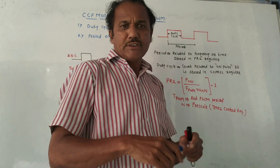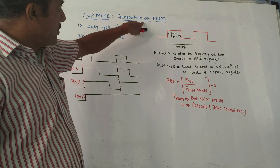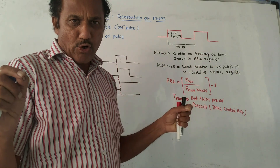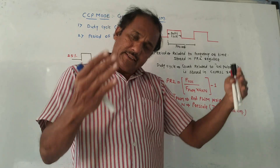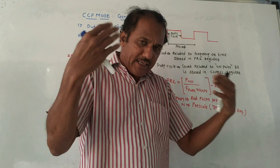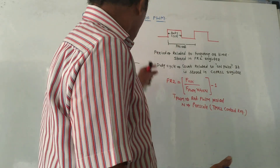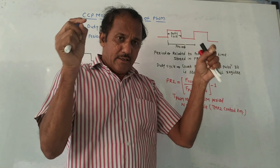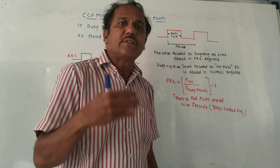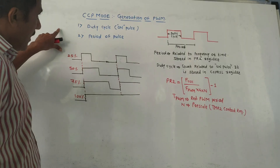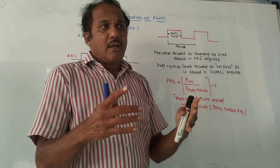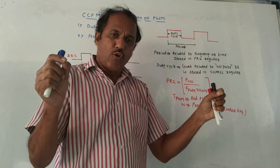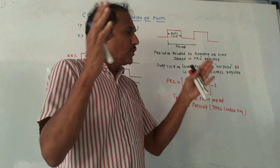Hello and welcome back to this channel. Today's topic is CCP mode generation of PWM waveform — that means we will discuss how to generate a PWM waveform using the CCP module of a PIC microcontroller. We previously discussed what CCP mode is. Today we discuss how to generate a pulse width modulated signal, which is used to control the speed of a DC motor. From an exam point of view, we may expect a question like: explain how the PWM waveform is generated using CCP mode of a PIC microcontroller.